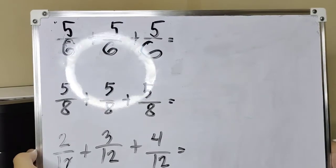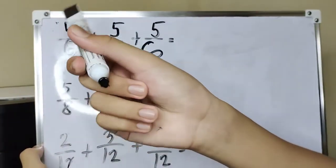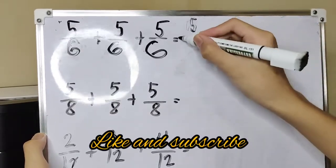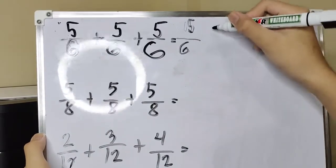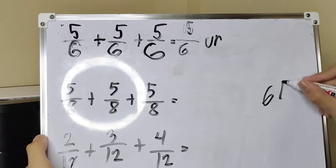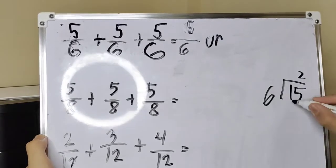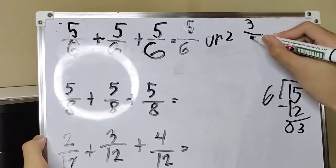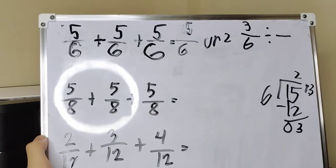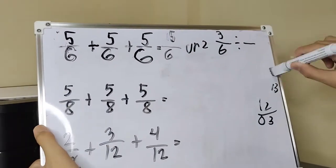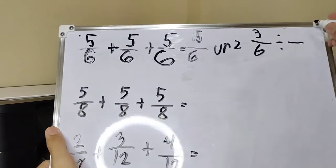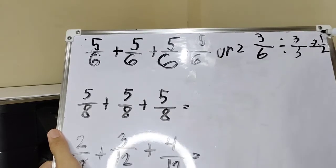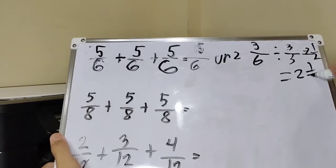Paano naman, kuya, kung 3 fractions ang i-add mo? Parehas rin. I-add ang mga numerator. 5 plus 5, 10. Plus 5, 15. Dahil improper fractions siya ulit, pididivide natin. Pwede pang i-lowest term yung 3, 6. So, kukunin ulit ang GCF nila. Ang lowest term ng 15/6 is 2 and 1 half.